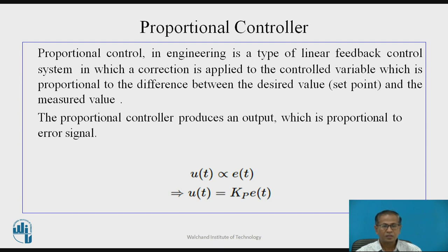Proportional controller: proportional control in engineering is a type of linear feedback control system in which a correction applied to the controlled variable is proportional to the difference between the desired value (set point) and the measured value. The proportional controller produces an output which is proportional to the error signal. So U(t) is directly proportional to E(t), where U(t) is the output signal and E(t) is the error signal.